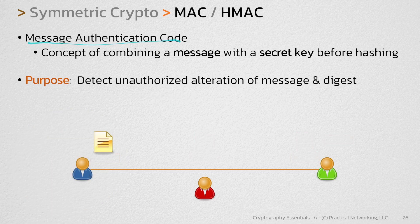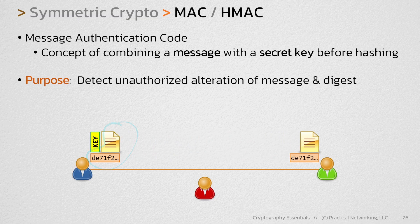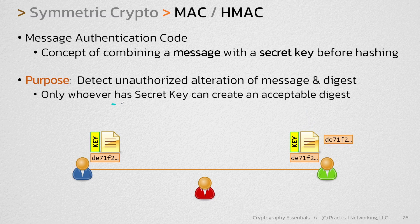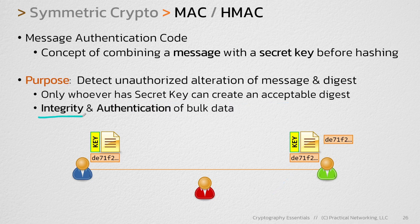Let me show you how a MAC solves this problem. With MACs, when this user has a message he wants to send across the wire, he's going to combine that message with the secret key before doing the hashing. Then the digest and the message are both sent across the wire — notice the secret key is not sent across the wire. The green user also has a copy of the same secret key. They will also combine that secret key with the message to calculate a digest. This creates a system in which only whoever has the secret key can create a digest that will be accepted, giving us not only integrity but also authentication.